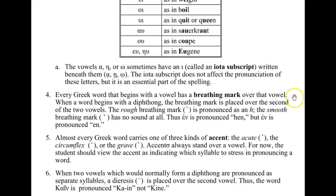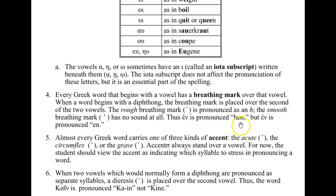Every Greek word that begins with a vowel has a breathing mark over that vowel. When a word begins with a diphthong, the breathing mark is over the second of the two vowels. If the breathing mark looks like a rough mark, it's a rough breathing mark and is pronounced as an H. If it looks smooth, it's a smooth breathing mark and has no sound. Thus, epsilon-nu with a rough breathing mark is pronounced 'hen,' but with a smooth breathing mark it's pronounced 'en.'